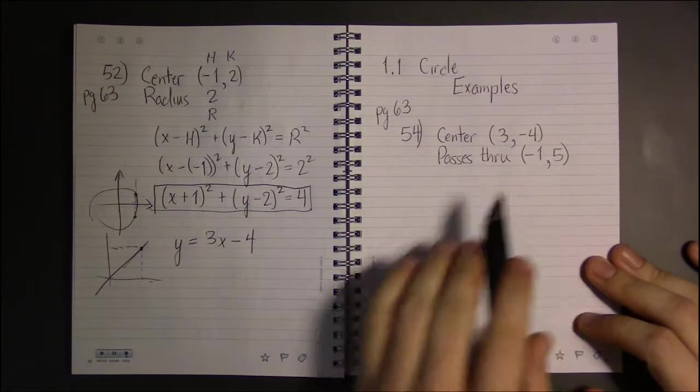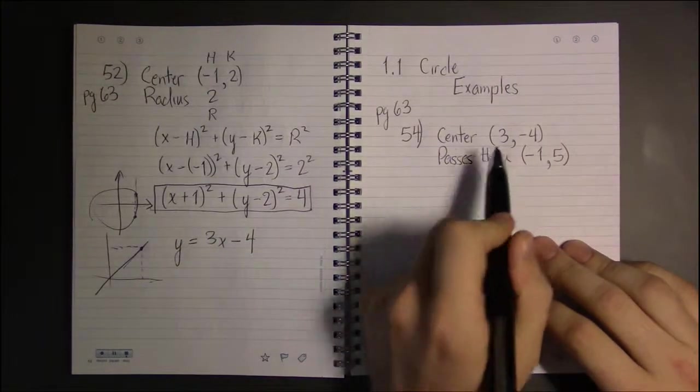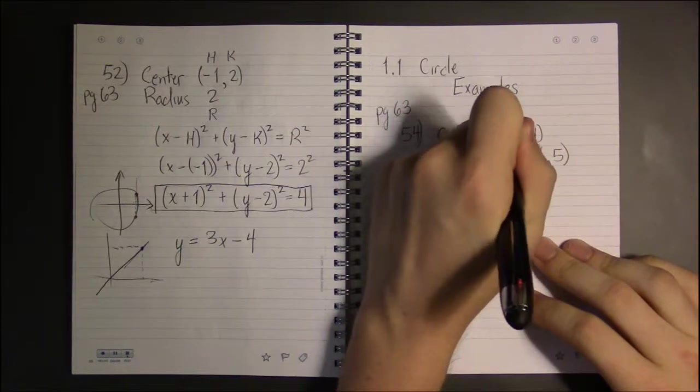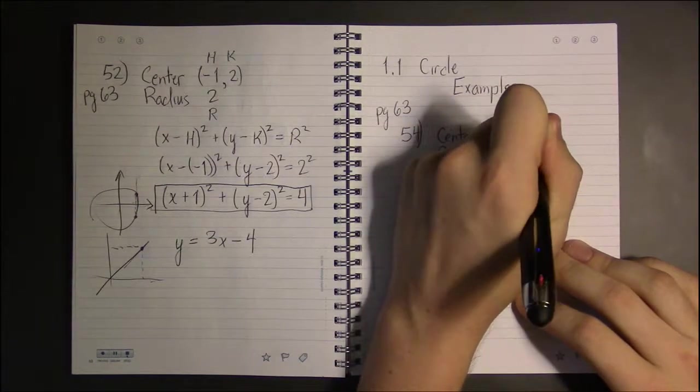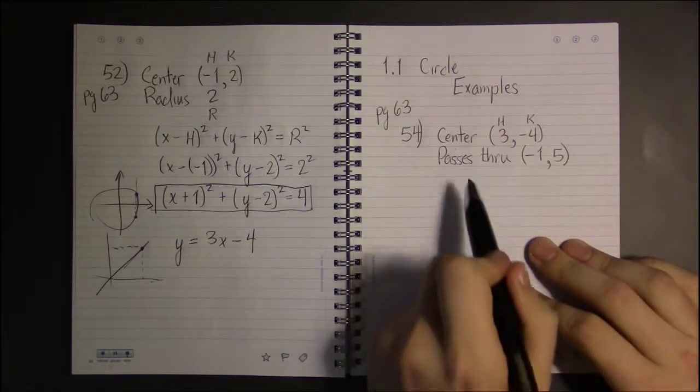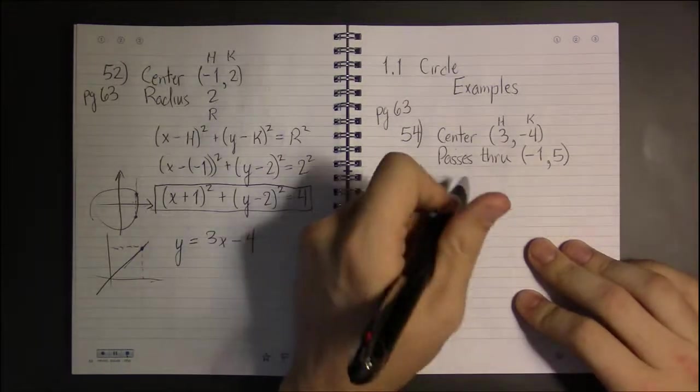So the center, that's part of the standard form of a circle. This tells us what H and K are. The problem is we still don't know what R is, so in order to answer this question we need to find the value for R.